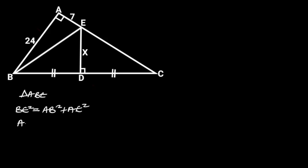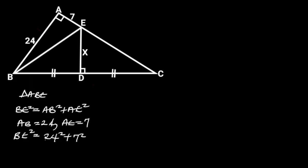AB is equal to 24 and AE is equal to 7. Substituting these values in the equation will give us: BE squared is equal to 24 squared plus 7 squared. 24 squared is 576, and 7 squared is 49. 576 plus 49 is equal to 625.